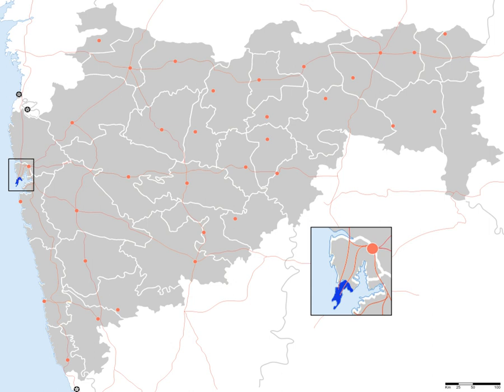Mumbai City District is a district of Maharashtra in Konkan Division. As a city district, it has no headquarters or subdivisions. It, along with the Mumbai Suburban District, makes up the metropolis of Mumbai.